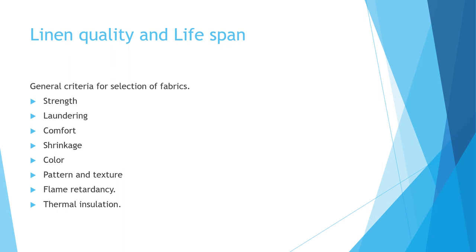Flame retardancy is the capability of not catching fire. A particular chemical is sprayed on fabrics to ensure they do not catch fire in case of a fire in the room. Thermal insulation refers to the warmth provided by fabrics and the passage of oxygen levels through them.